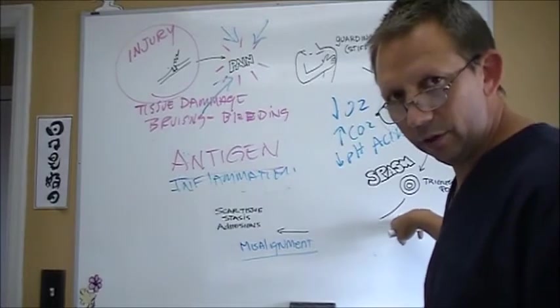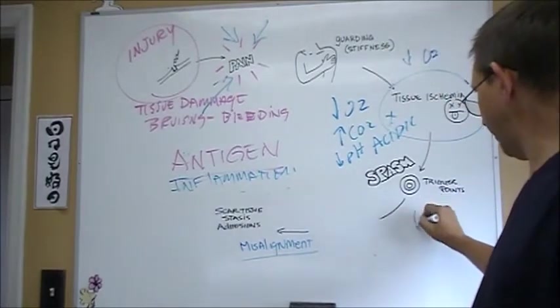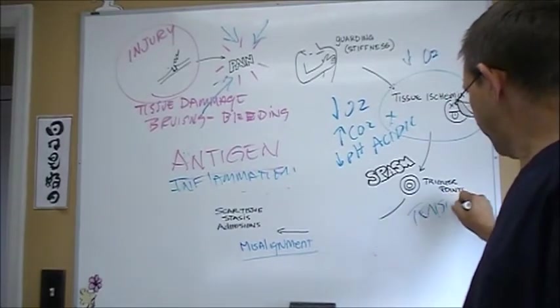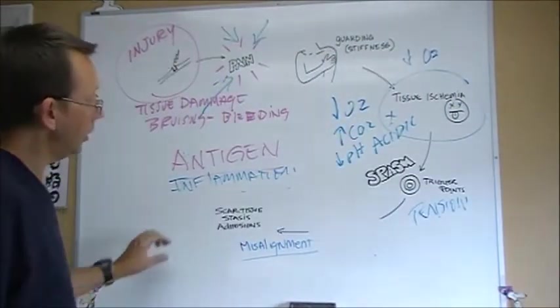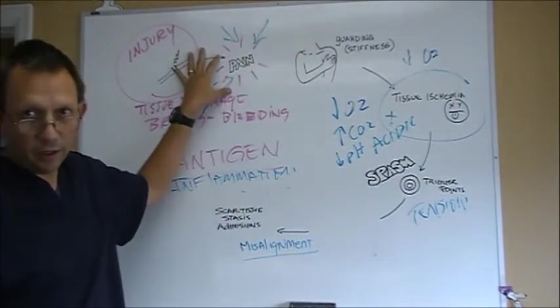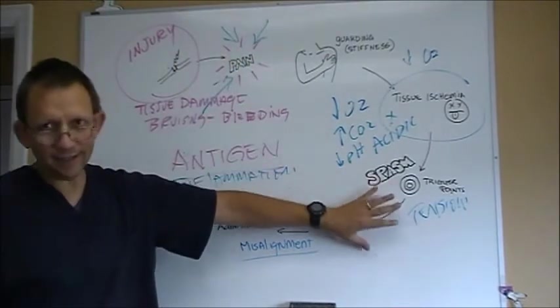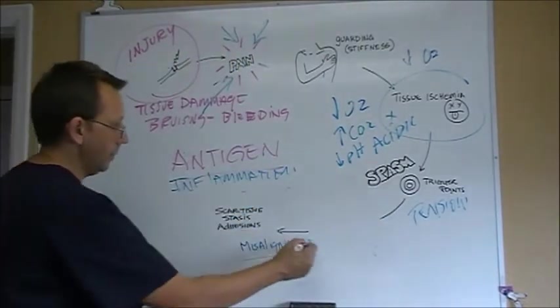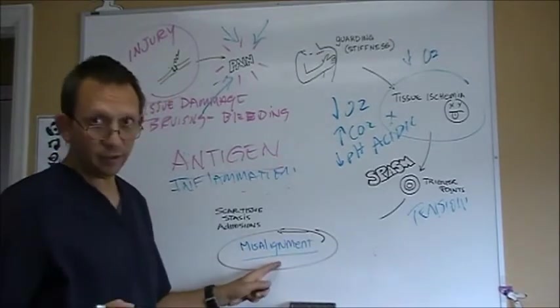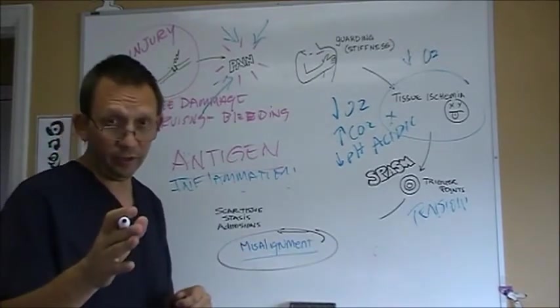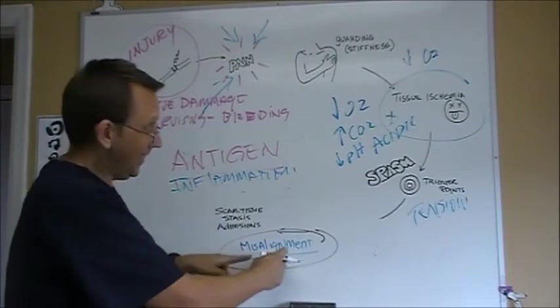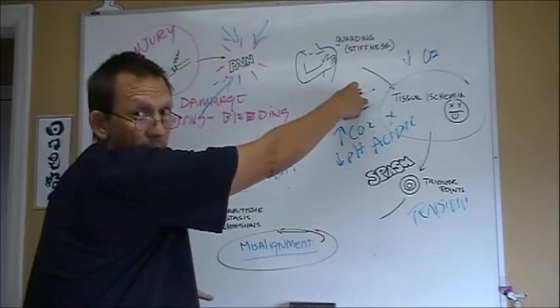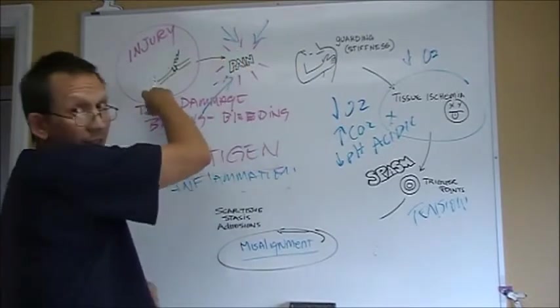Spasm is a natural reaction. Tension, trigger points, all of that kind of stuff, tension, all of those kind of things are a natural reaction to guarding or pain. Now, as that tightens up, it can cause misalignment. Misalignment, that's the joints out of place. When you go to the chiropractor, you get adjusted. That's what we're trying to do is change this so that this stops, so that this stops, so that this stops, and so that this can heal.